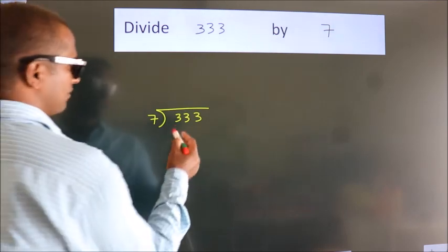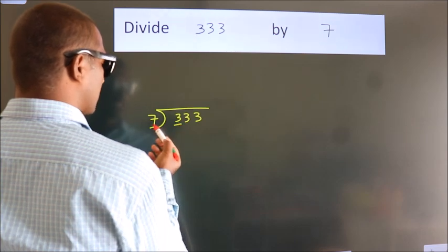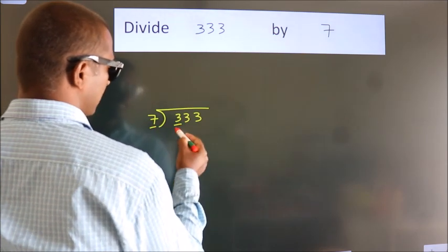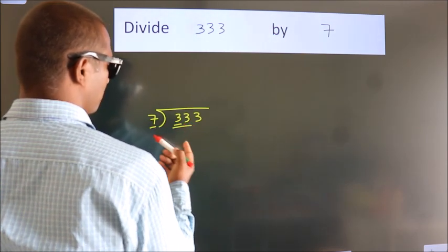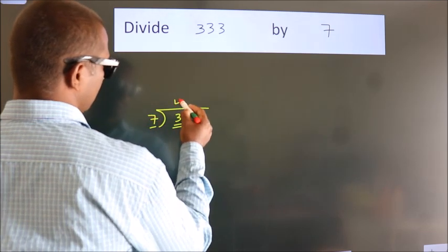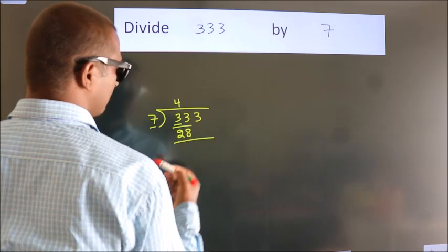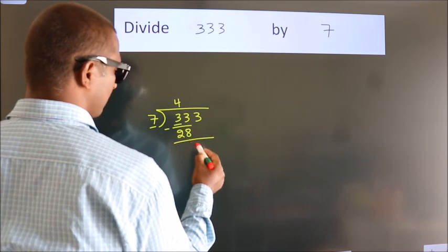Next, here we have 3, here 7. 3 smaller than 7, so we should take 2 numbers: 33. A number close to 33 in 7 table is 7 fours, 28. Now we should subtract. We get 5.